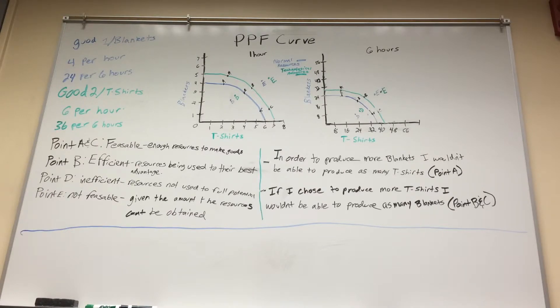Points A and C on the curve are feasible which means there are enough resources to make the goods. Point B represented on the graphs is the most efficient which means the resources are being used to their best ability.